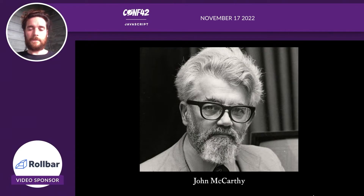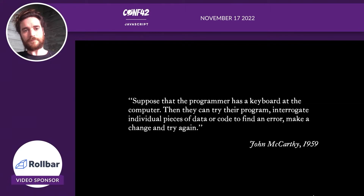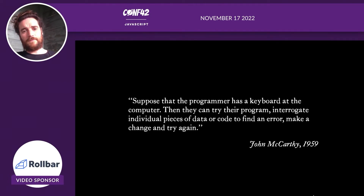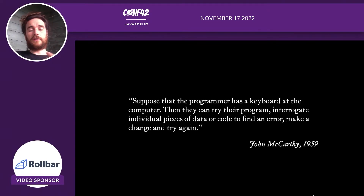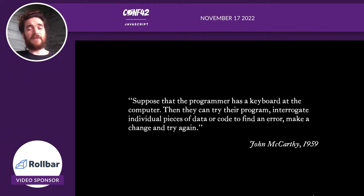One programmer who saw the potential of this interface was John McCarthy, who had this incredibly visionary thing to say in 1959: 'Suppose that the programmer has a keyboard at the computer' — the programmer, not the computer operator — 'then they can try their program, interrogate individual pieces of data or code to find an error, make a change, and try again.' What he's describing is basically interactive programming — programming with a fast feedback loop where you can really delve into what your code is doing. The only problem was that in 1959, no one could afford to use computers like this, because computers were very expensive and could only do one thing at a time, and interactive programming would have been a huge waste of a computer's time.